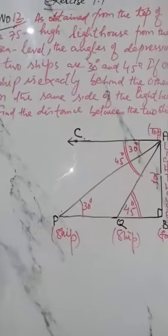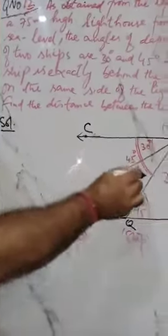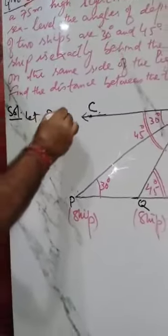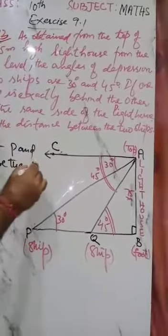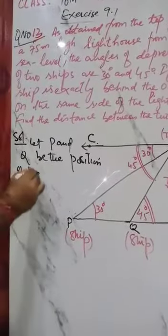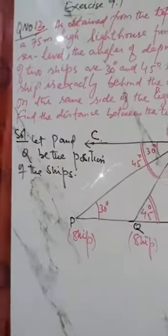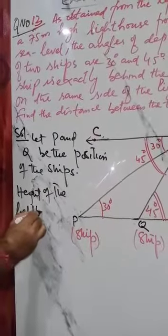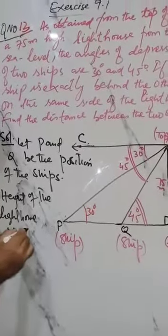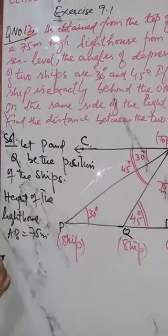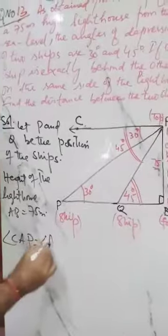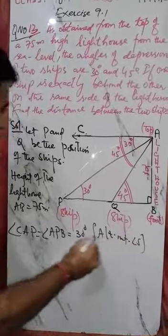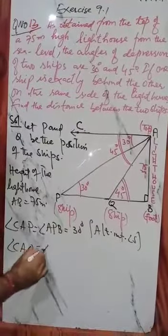So let us start the solution. Height of the lighthouse is given. B is here, P and Q are the two ships. Let P and Q be the position of the ships. Height of the lighthouse, AB, is 75 meters. Angle of depression forms alternate interior angles.